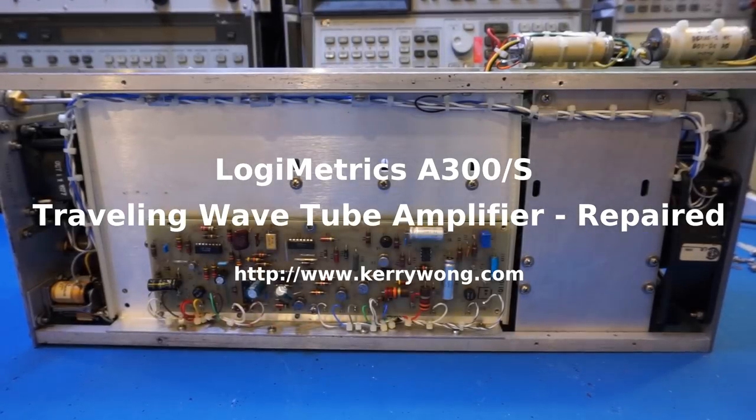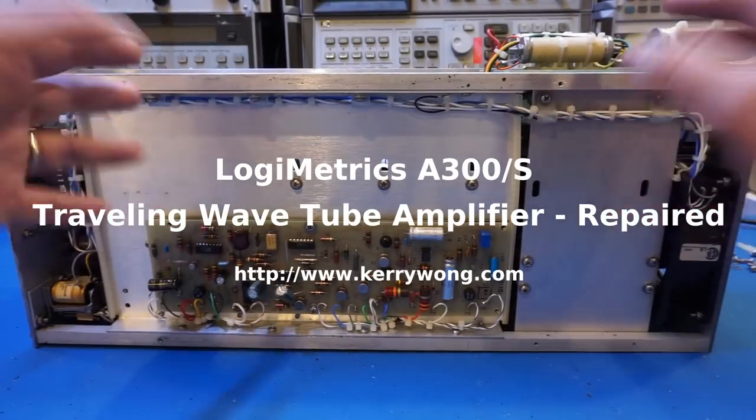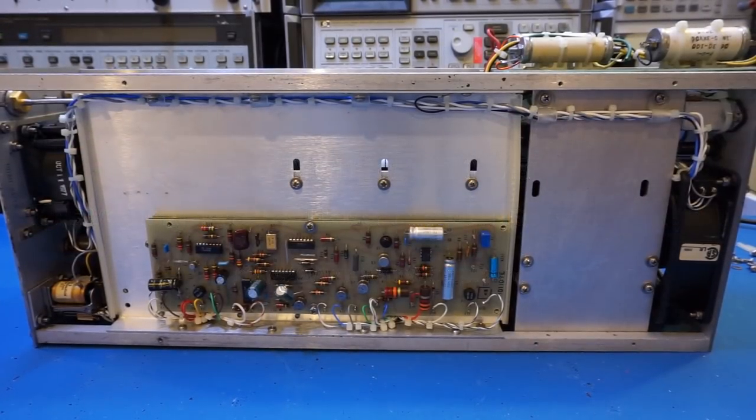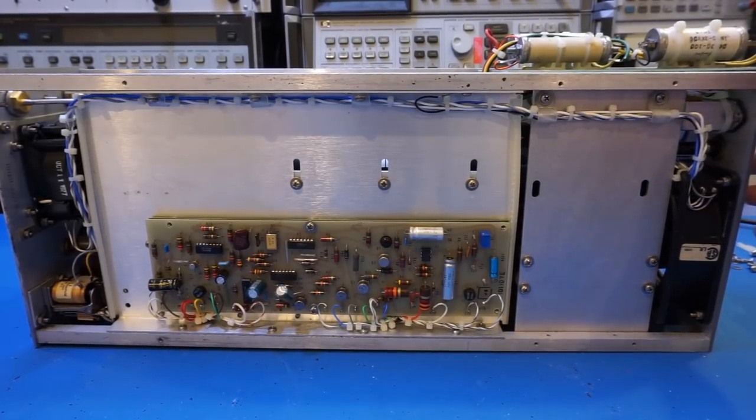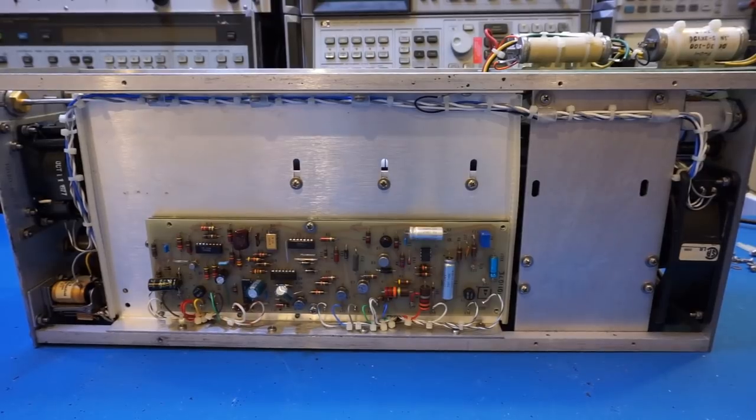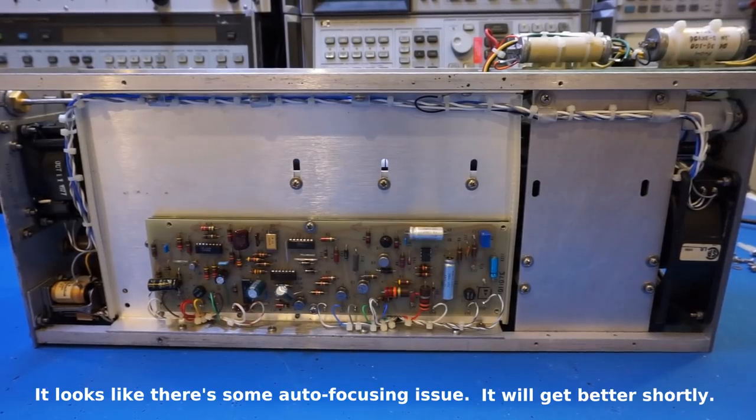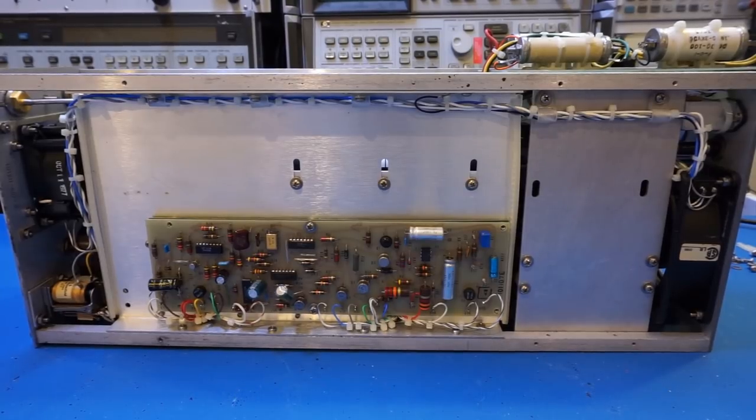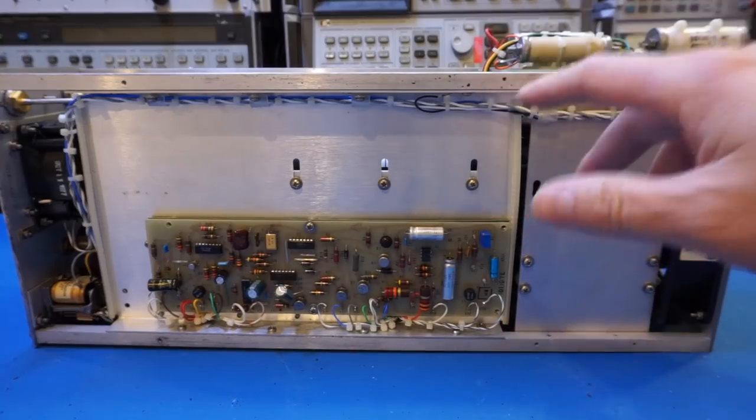Hi, last week I did a teardown of this Logimetric 300 traveling wave tube amplifier but did not power it up because there were some issues with this unit. For example, the fuse and fuse cover were missing, and in the eBay listing the seller mentioned that the fuse was blown when he attempted to turn it on. So I wasn't just going to simply replace the fuse and try again as it would potentially cause more damage if indeed there was a short somewhere inside this unit.